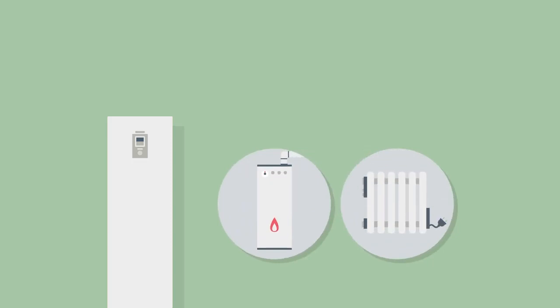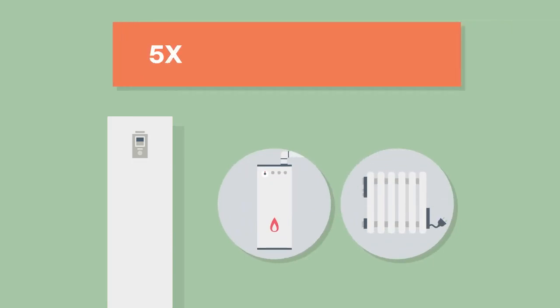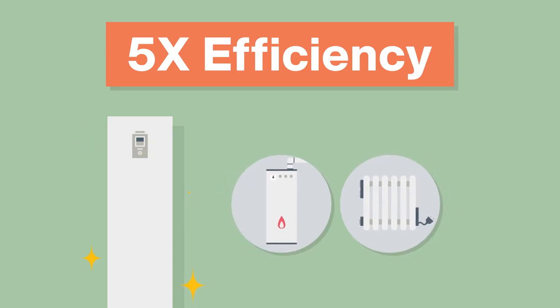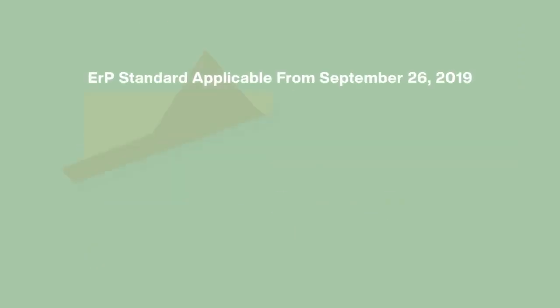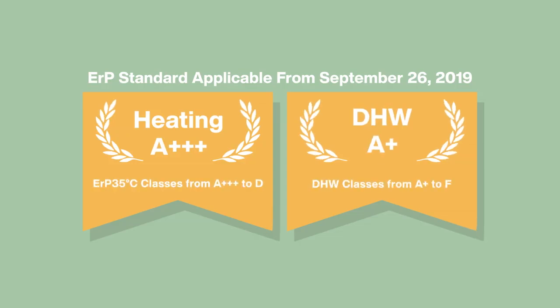Aquaria is so energy efficient that it can produce approximately five times the energy a traditional boiler or electric heater can. In fact, Aquaria has been evaluated as one of the highest class models in heating and domestic hot water energy efficiency standards.